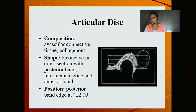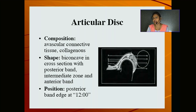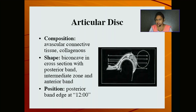The articular disc lies between the joint cavities. It is a fibrocartilaginous joint disc, and because of it, the joint cavity is divided into menisco-temporal and menisco-mandibular compartments. Its composition is avascular connective tissue, fibrous collagenous. In cross-section it is biconcave, with a posterior band, intermediate zone, and anterior band. The posterior edge lies at the 12 o'clock position.